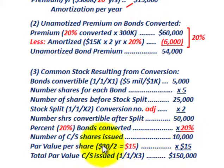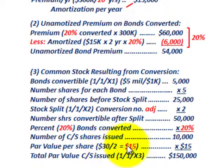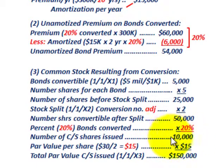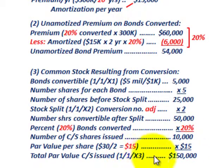The par value per share: we were at $30 before the split, so with twice as many shares outstanding, that reduces our par from $30 down to $15 per share. Our par value per share of $15 times the 10,000 shares issued on this conversion gives us total par value of common stock issued on 11x3 of $150,000.